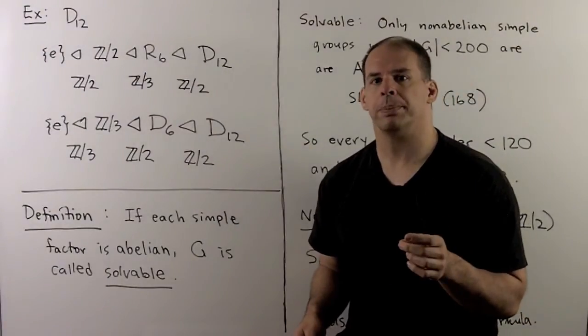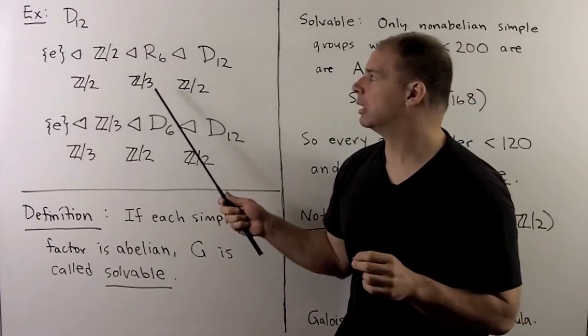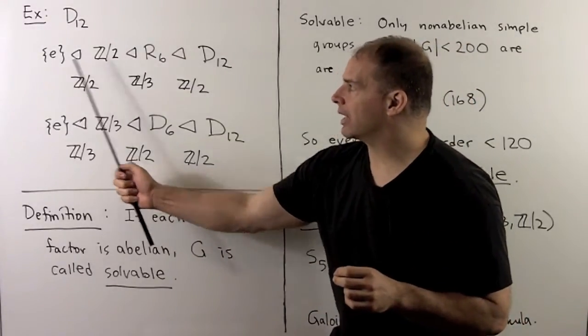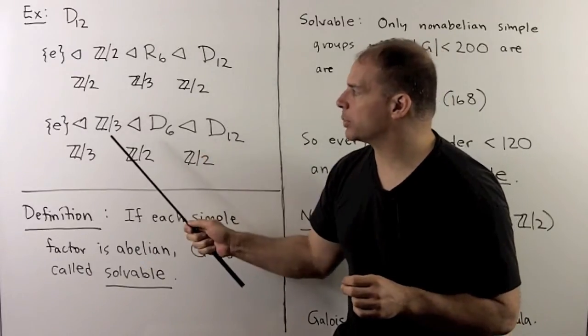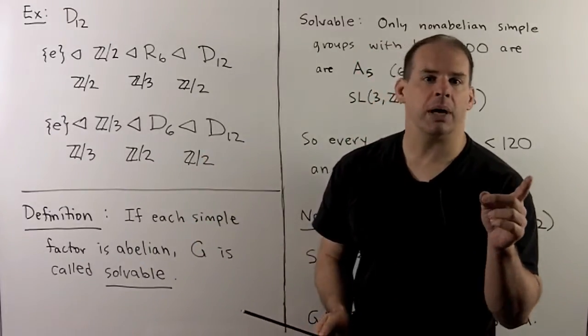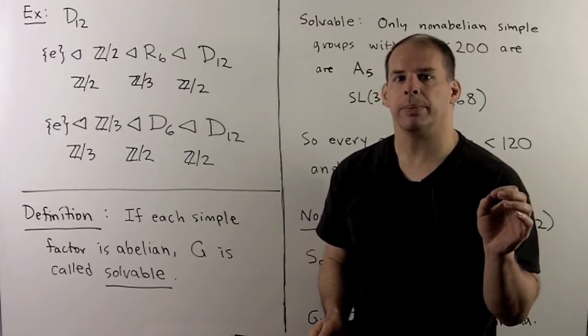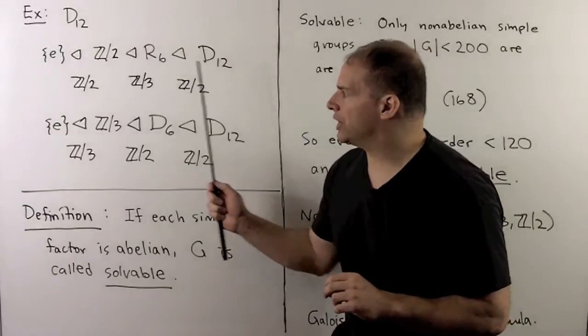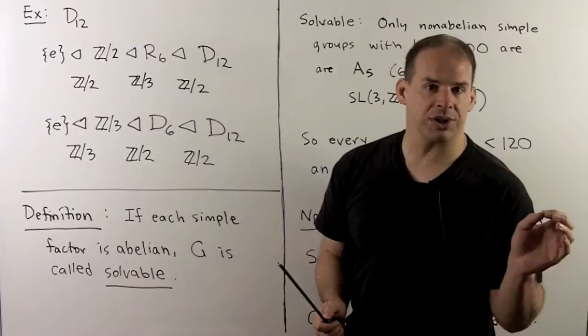For an example, consider D12, symmetry group of a regular hexagon. We could set up composition series as follows. So, note we're using very different subgroups here. But Jordan-Holder says simple factors that come out will be the same. When we check, we get two Z2s and a Z3 in each case. So Jordan-Holder works here.